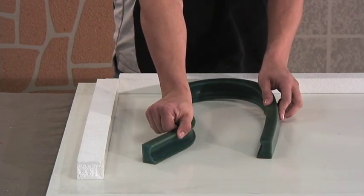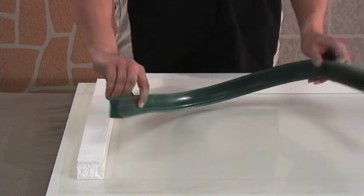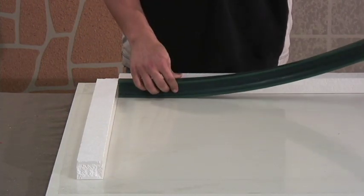SureCrete also has available 16 different urethane edge details. Each edge detail comes in 10 foot lengths.